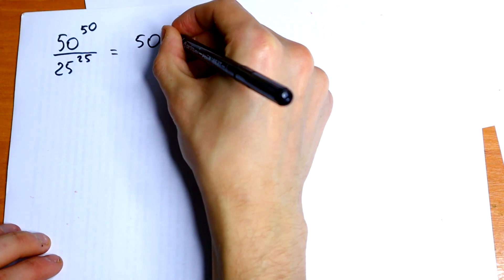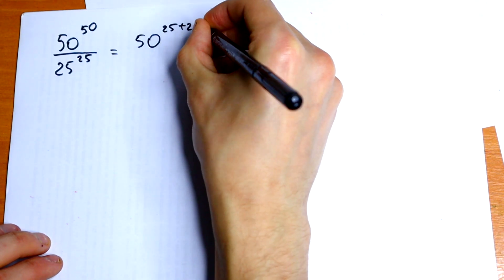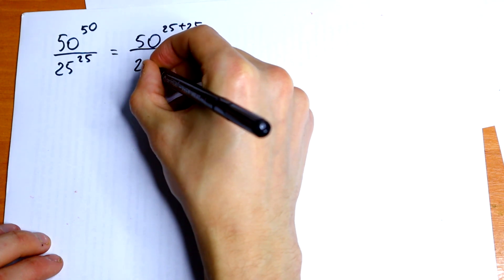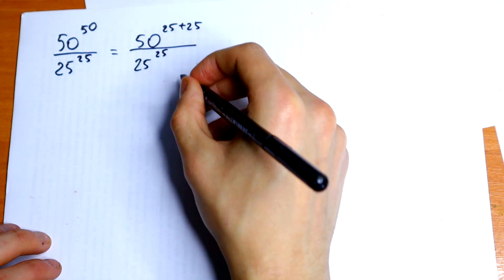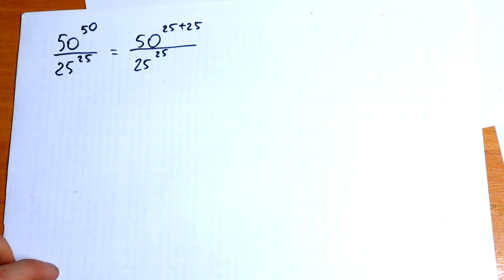So 50 to the 25 plus 25 all over 25 to the 25th power. We can do this for sure.